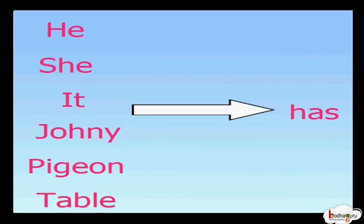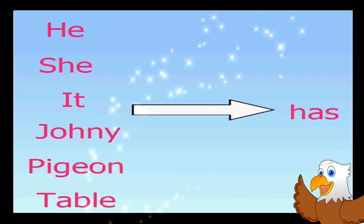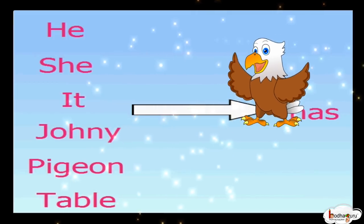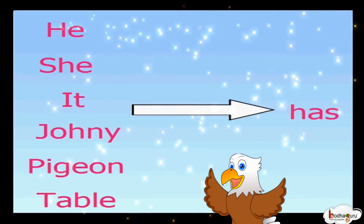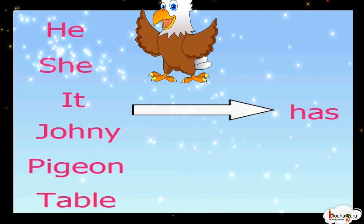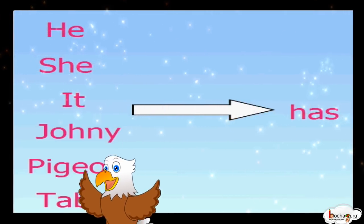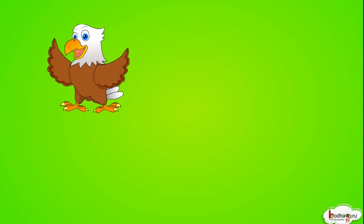'Has' is used with he, she, it, or any singular noun — that is the name of a person, or a thing, or an animal. For example, a bird has two wings. We are talking about one bird — a singular noun — so we use 'has'.